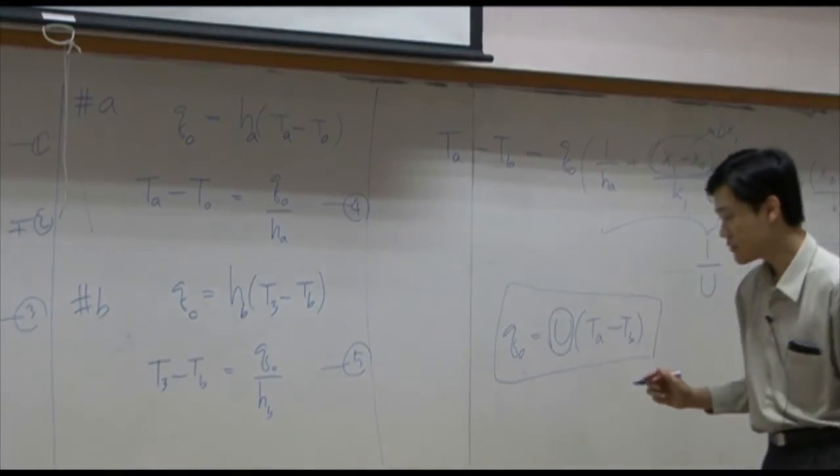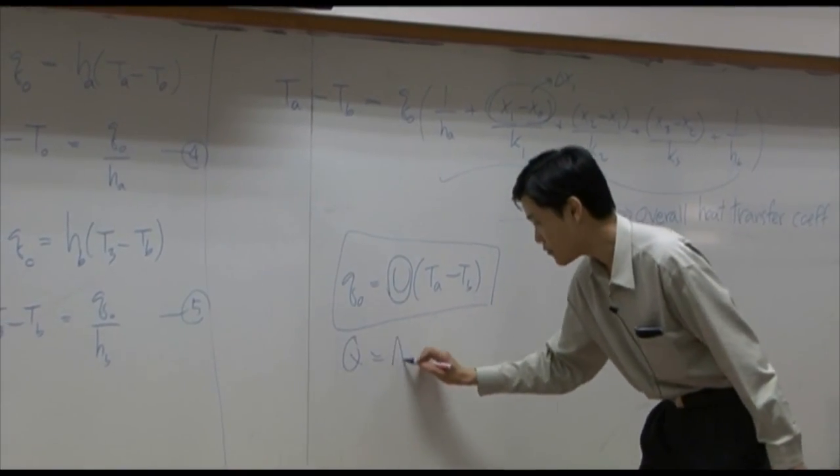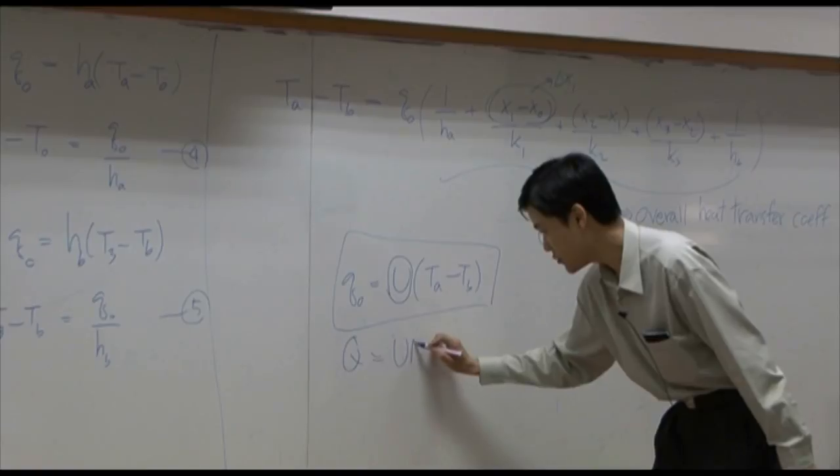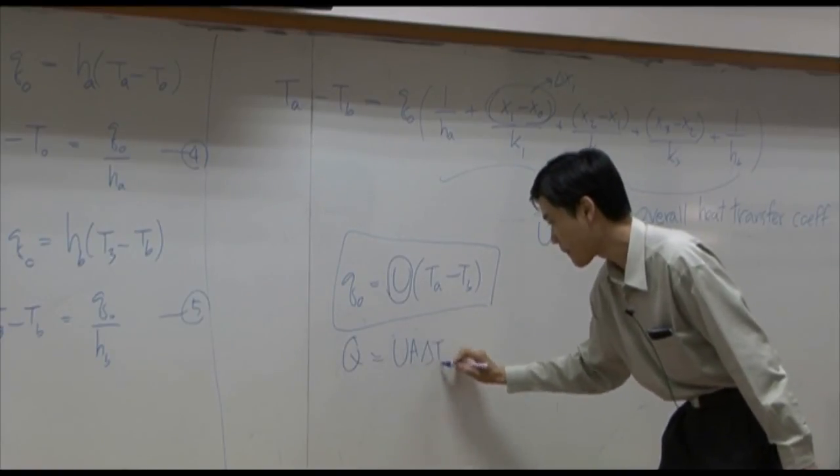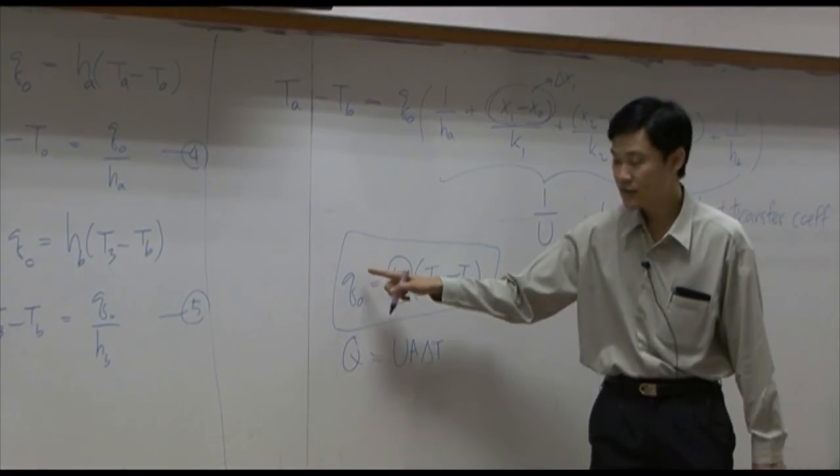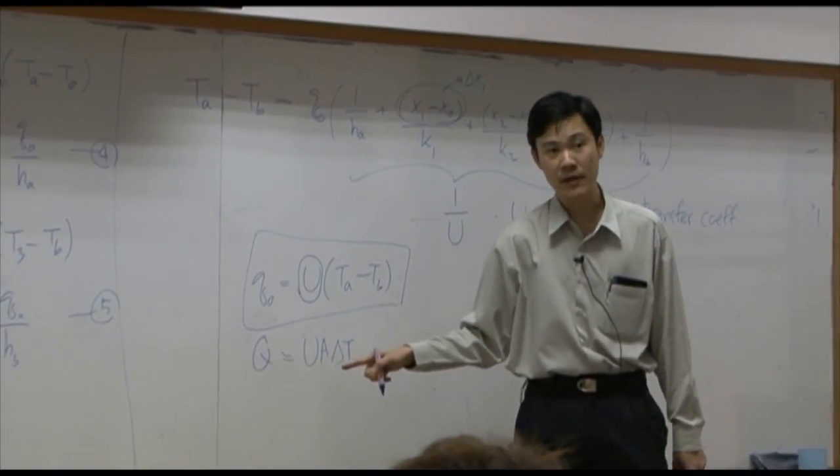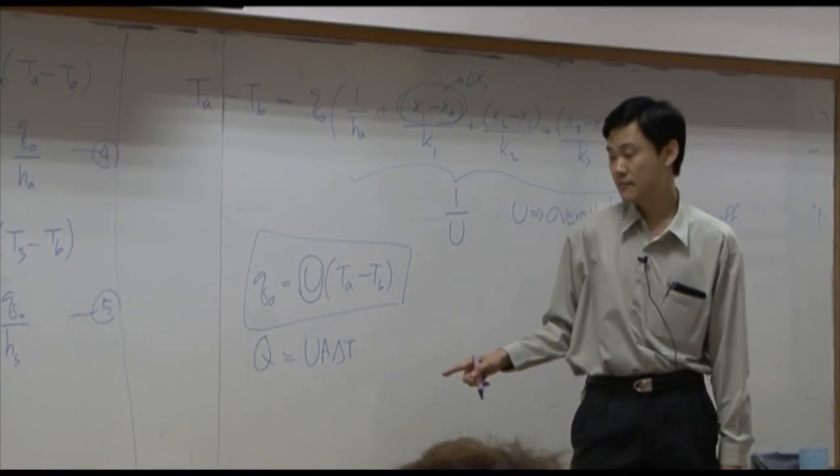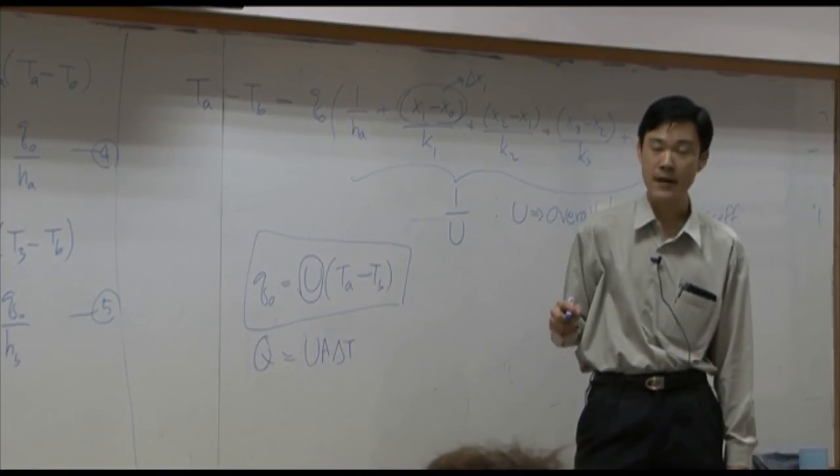Sometimes you may see this equation: Q equal to U A delta T. It's just the same. But small q is a heat flux. It's capital Q divided by area perpendicular to it. Delta T here will be driving force.